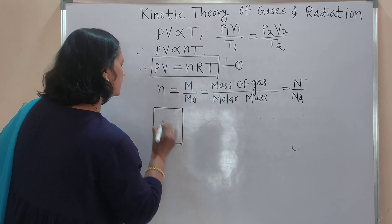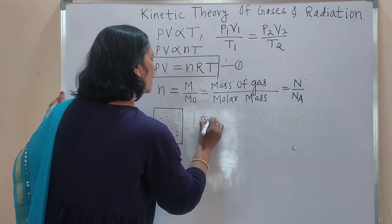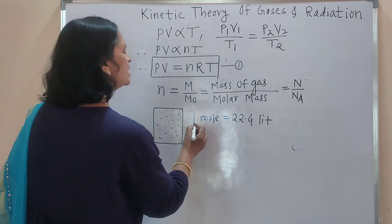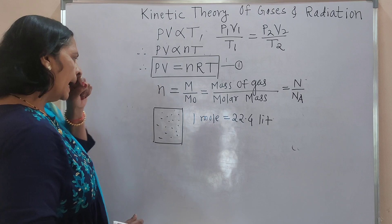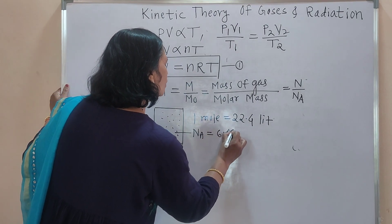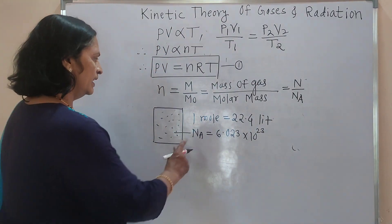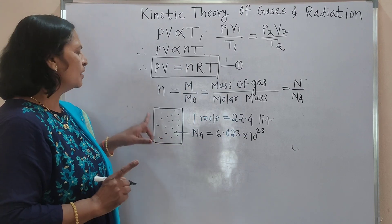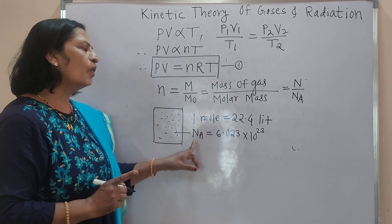Consider 1 mole of a gas. One mole of gas equals 22.4 liters of gas — this is the relation between mole and liter. In that 1 mole of gas, the number of molecules is 6.023 × 10²³. That is called Avogadro's number. This NA is Avogadro's number — the number of molecules present in 1 mole of gas, meaning in 22.4 liters volume of gas.